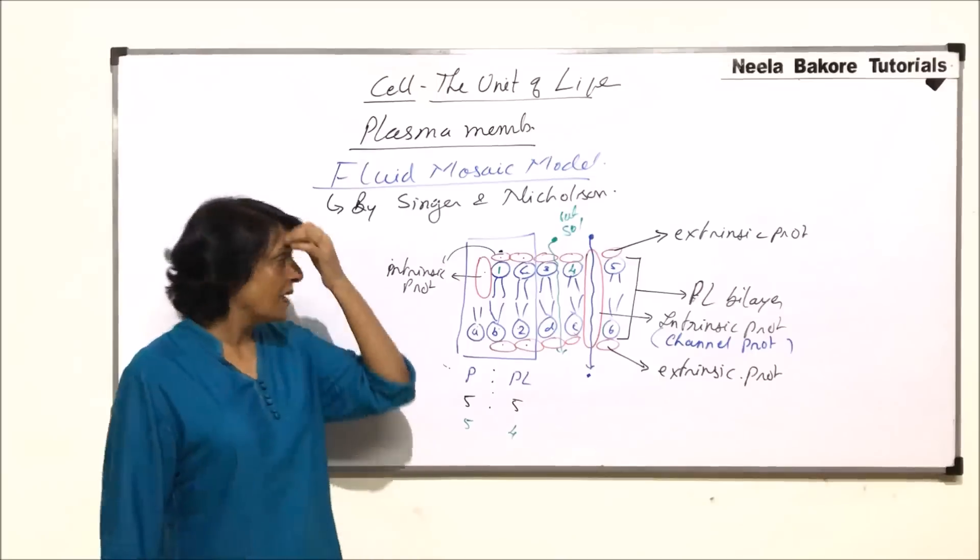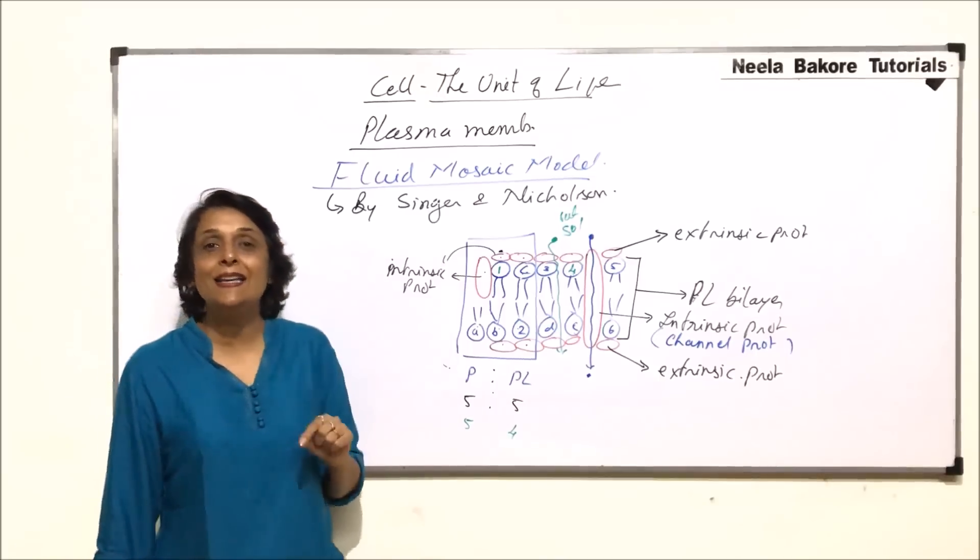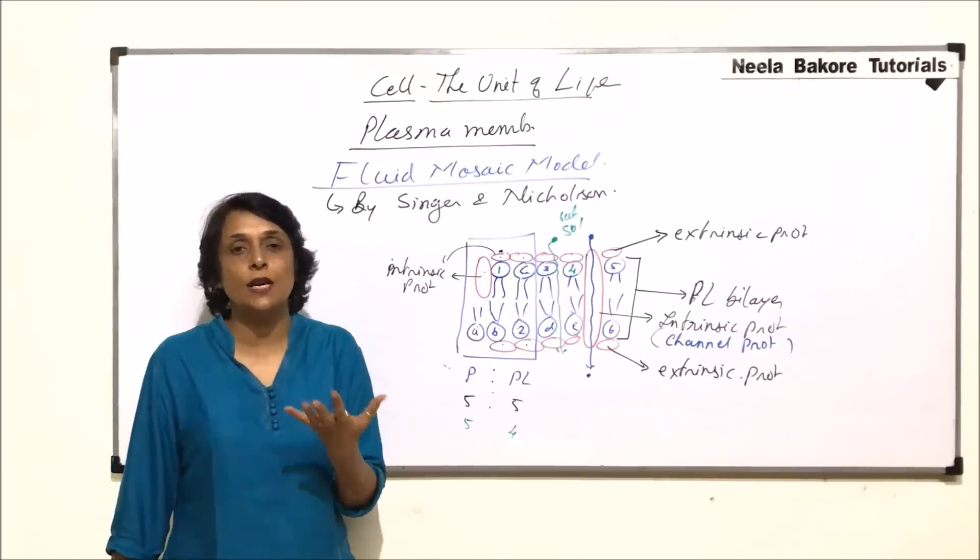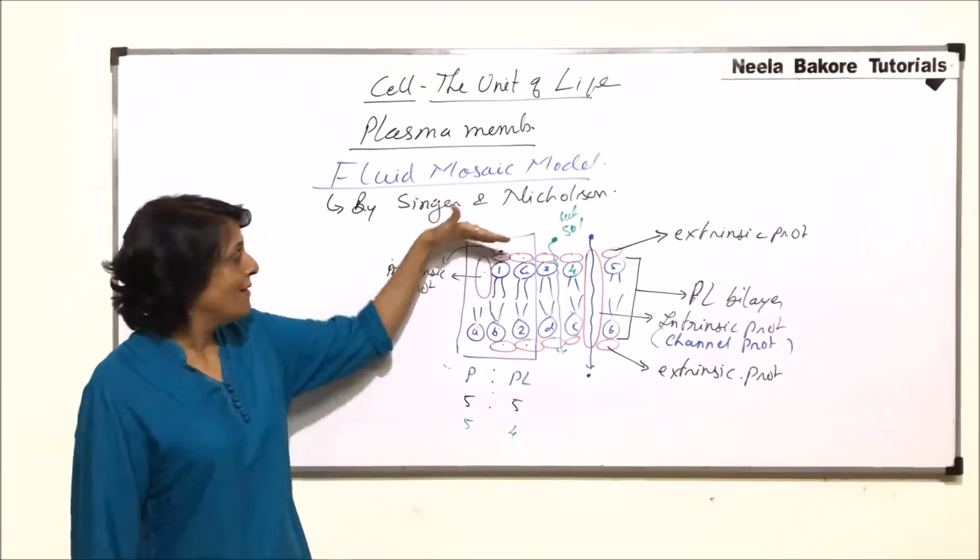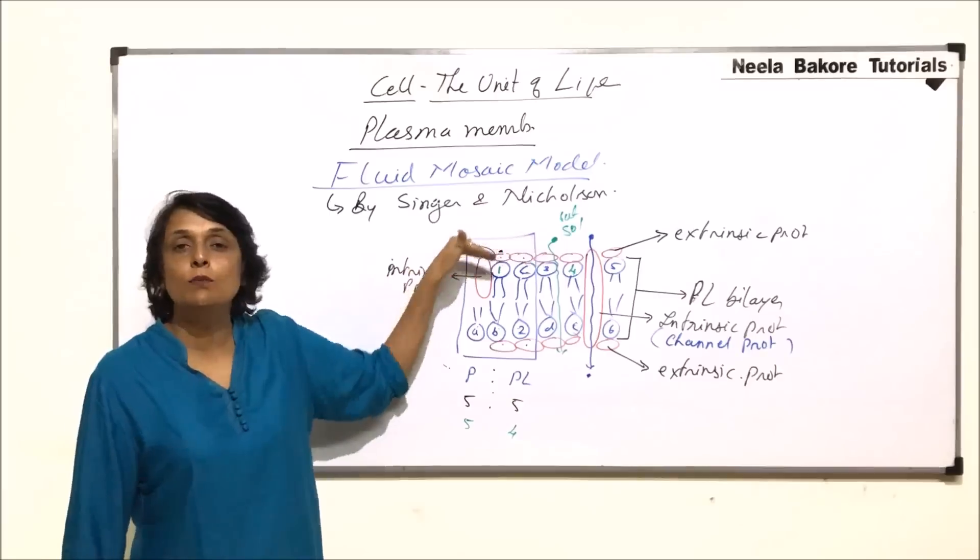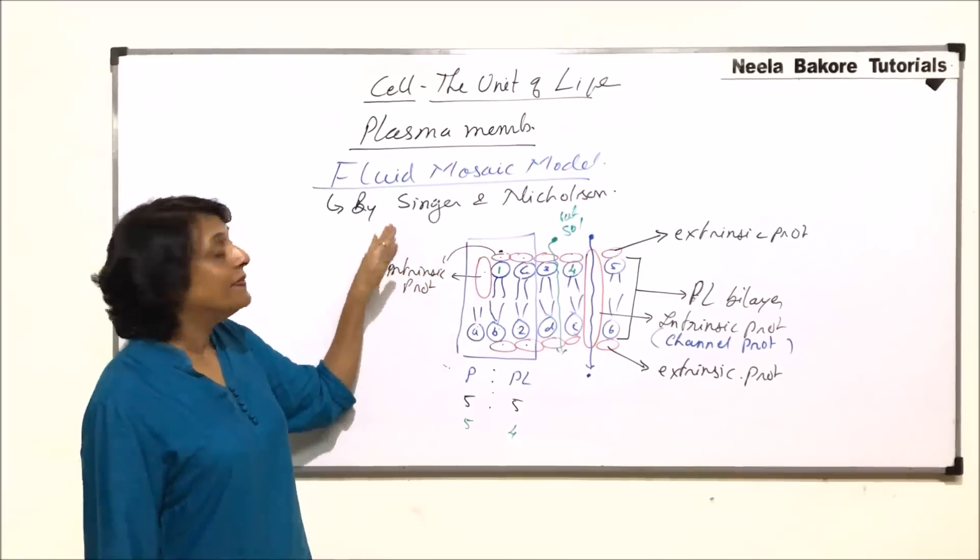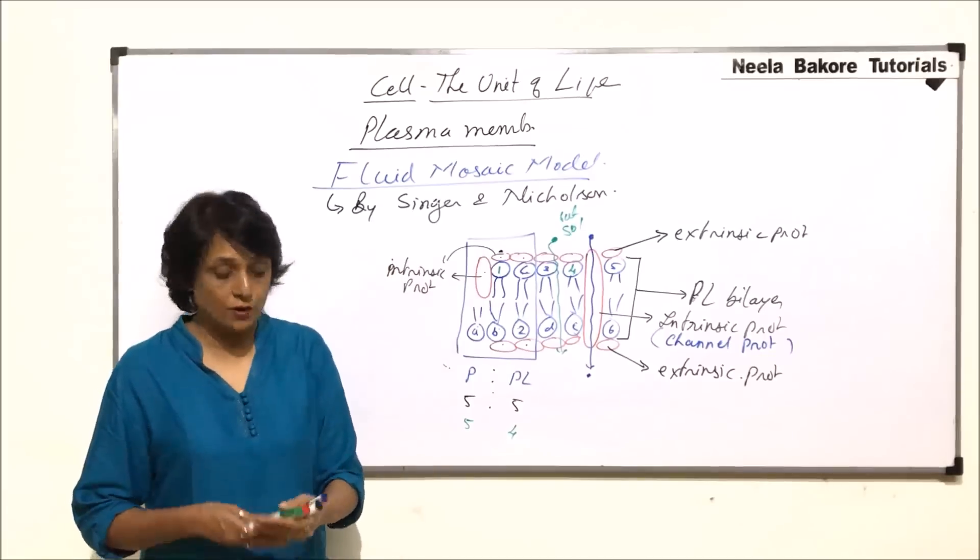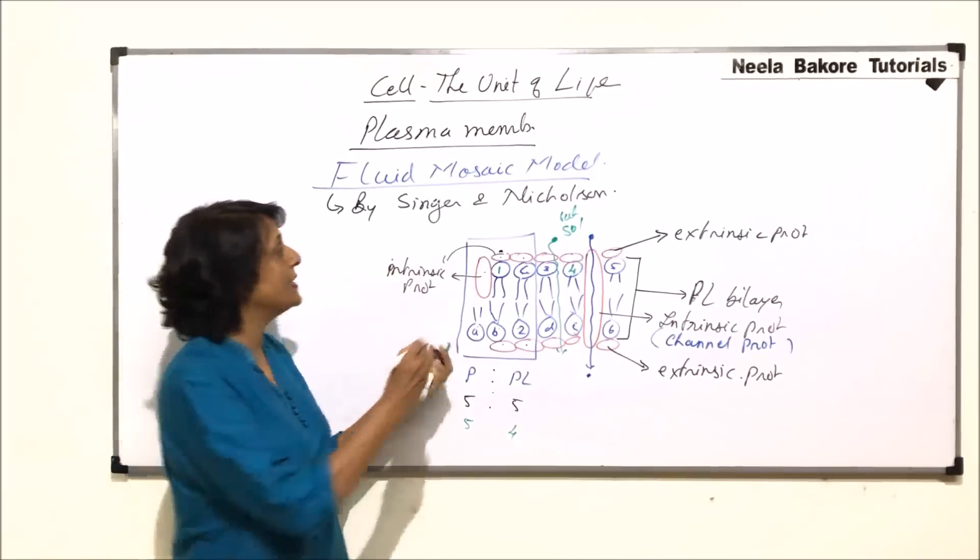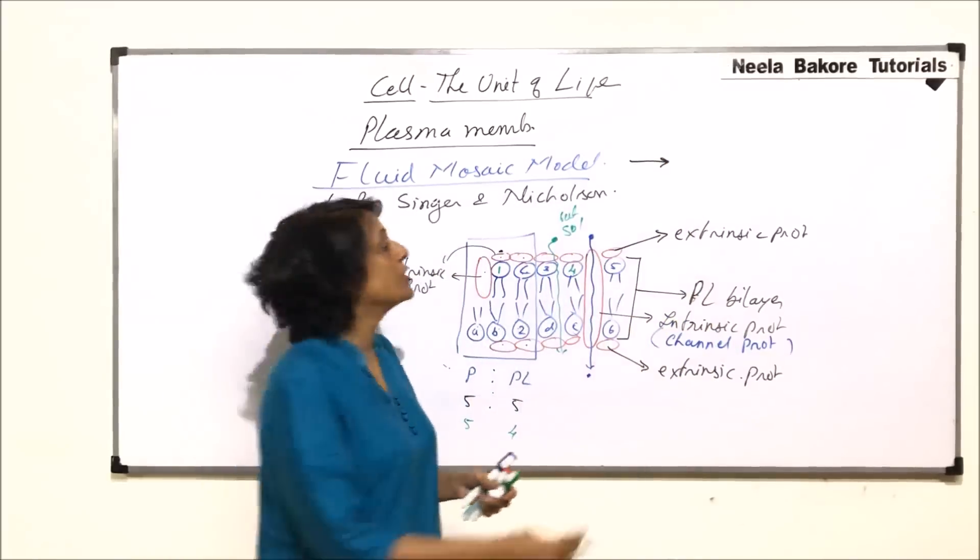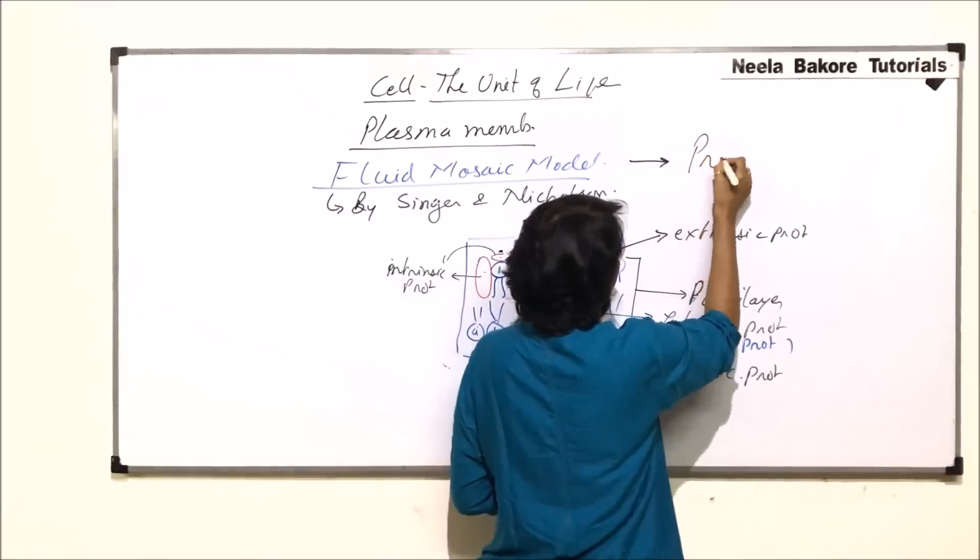Now comes the third point. The third point is the dynamic nature. Fluidic nature is possible only when one molecule or one particle moves on the other one. And to explain this, they gave a phrase for their model. They said, our model is like protein icebergs in the sea of lipids.